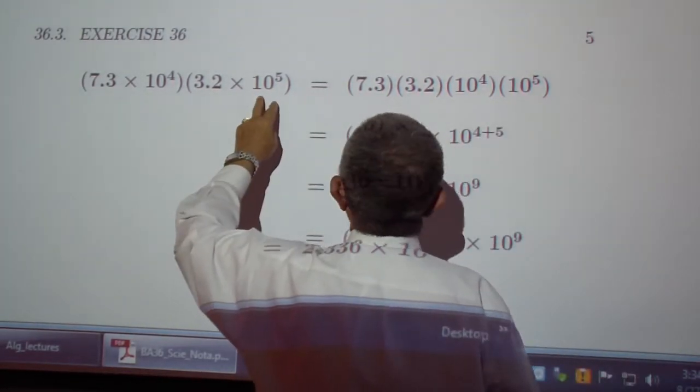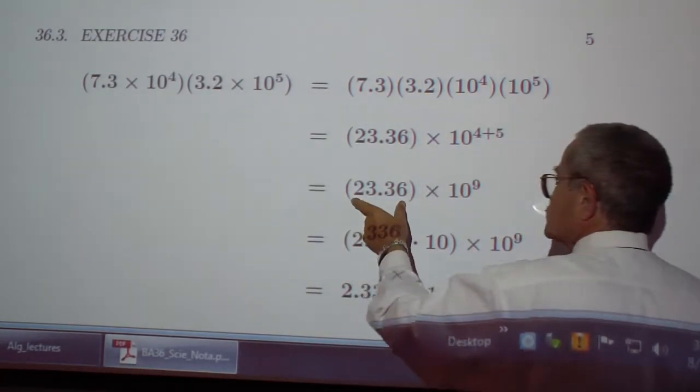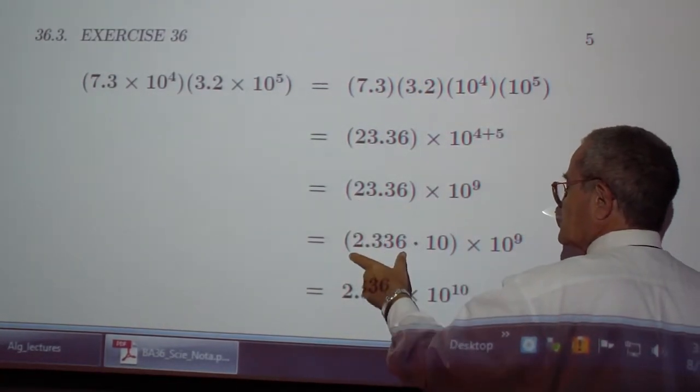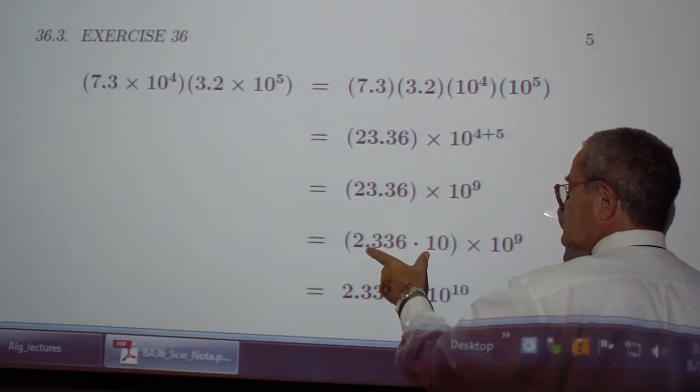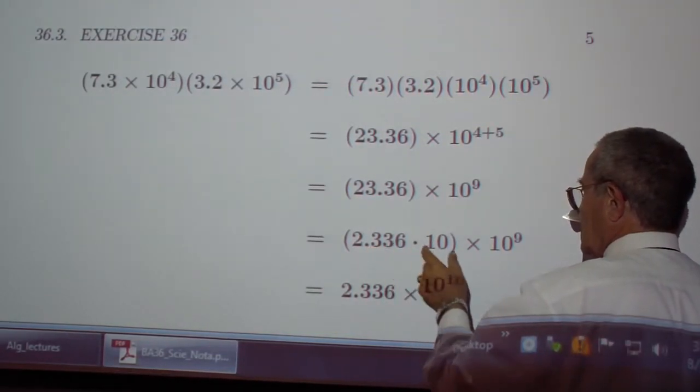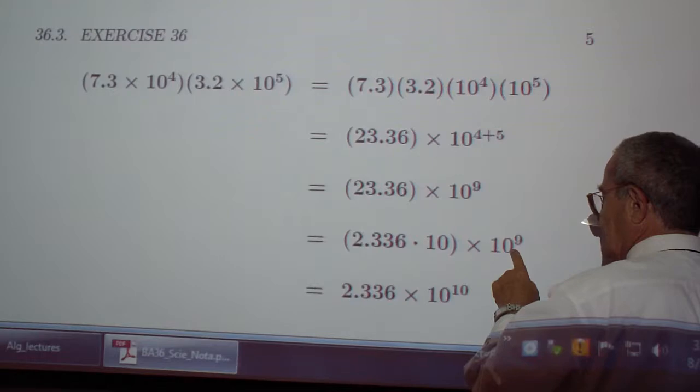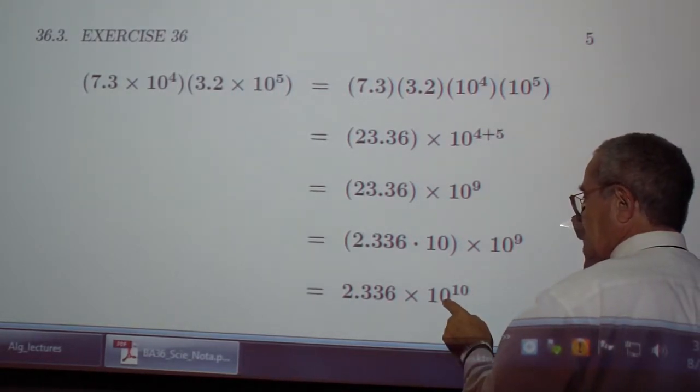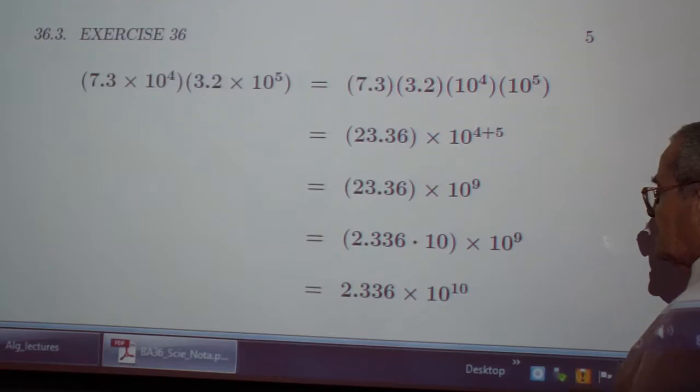10 to the 4 times 10 to the 5 is 10 to the 9. This is not between 1 and 10, but this can be rewritten as 2.336 times 10. And then 10 to the 9 times 10 is 10 to the 10. There's your product in scientific notation.